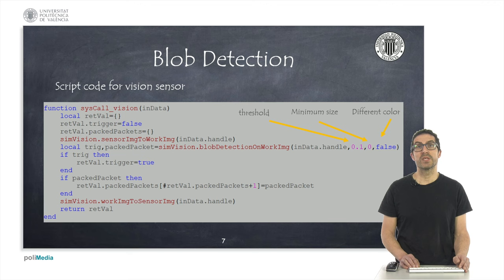In addition to this, in the code that includes the sensor, we are actually going to modify the default code that is included in the syscall vision function, that will allow us to implement the actual blob detection. In the code I show here, you can see that I'm calling the blob detection on work-im function that allows detecting the objects or blobs.